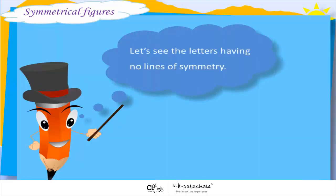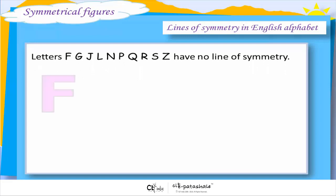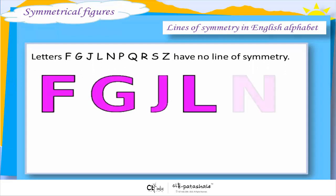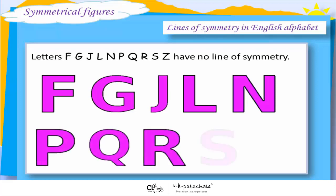Let us see the letters having no lines of symmetry. F, G, J, L, N, P, Q, R, S, Z have no lines of symmetry.